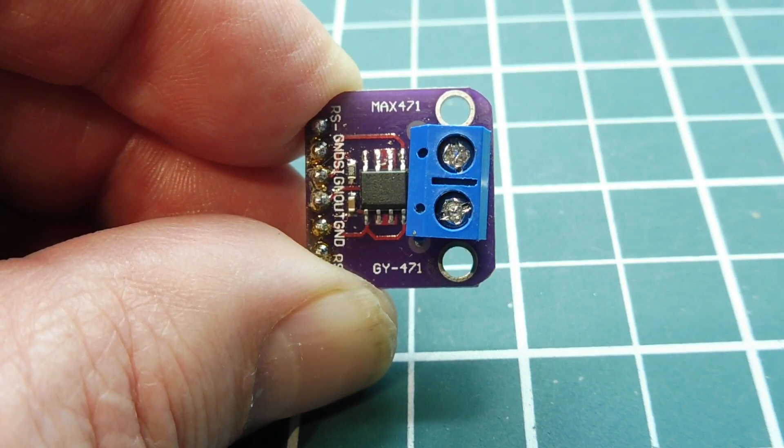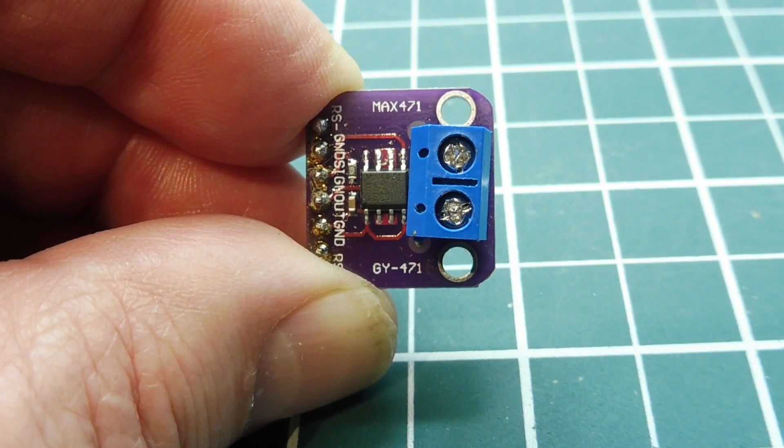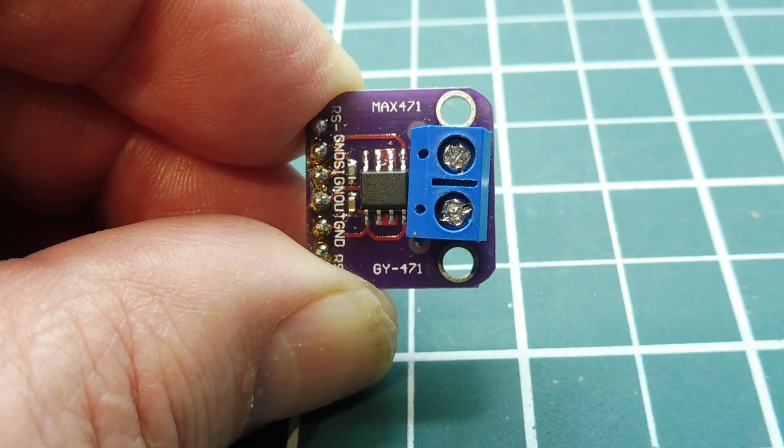The MAX471 takes the voltage drop across that resistor and calculates the current. That's the current flowing through our load.